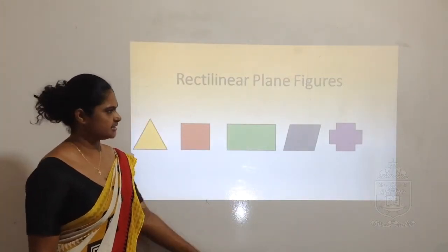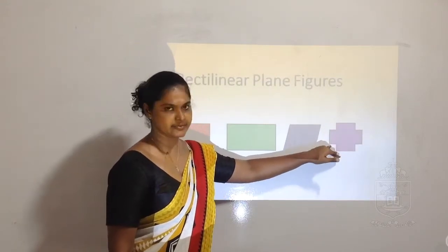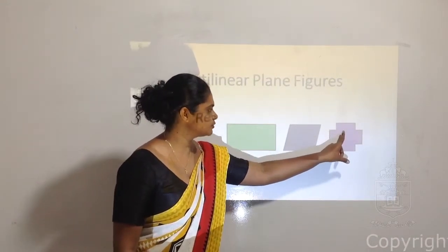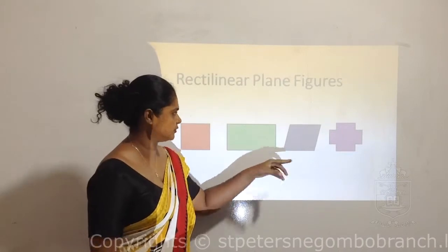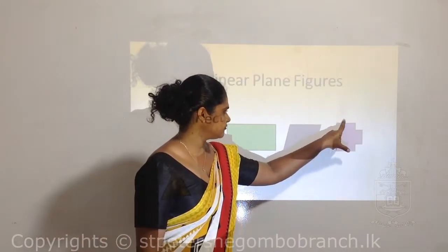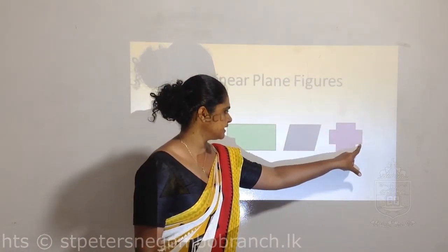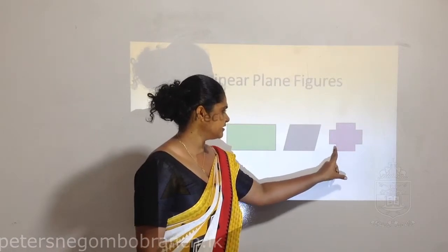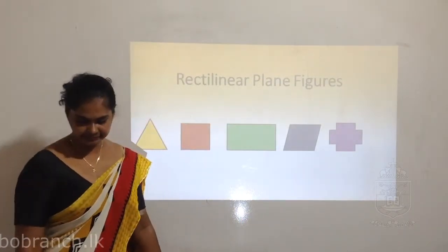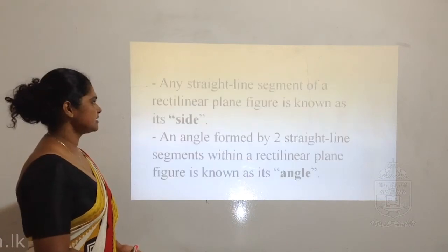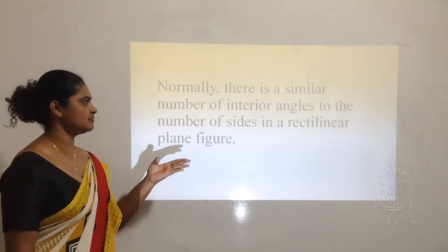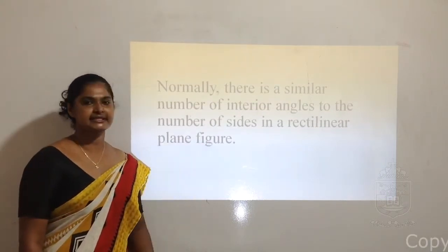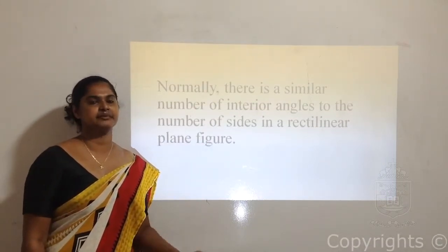Let's count the sides of the cross: one, two, three, four, five, six, seven, eight, nine, ten, eleven, twelve sides. And there were twelve angles. So we can say that there is a similar number of interior angles to the number of sides in a rectilinear plane figure.